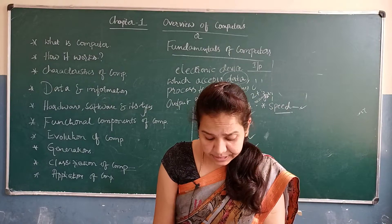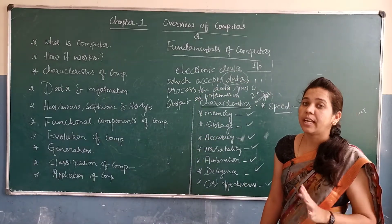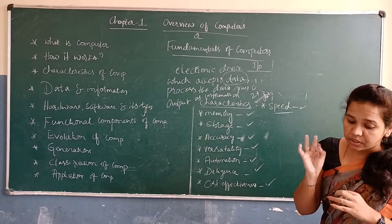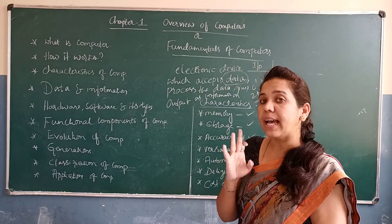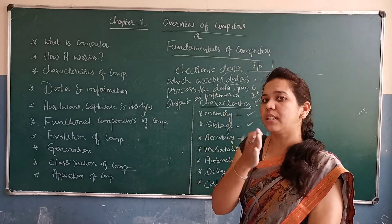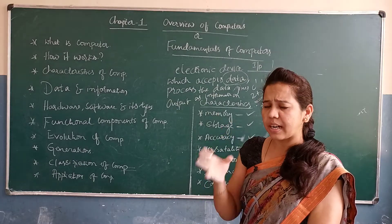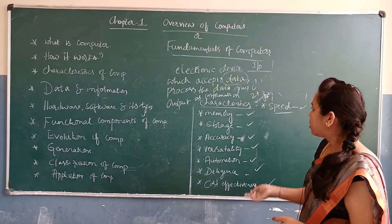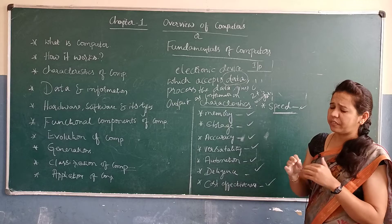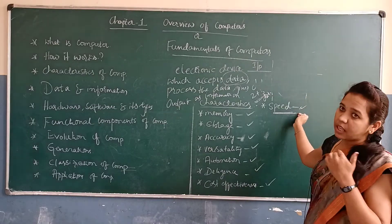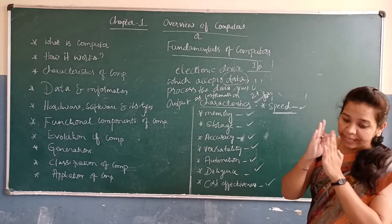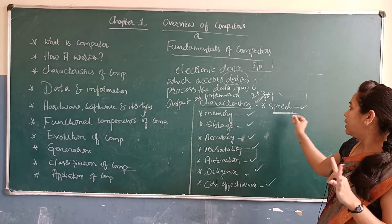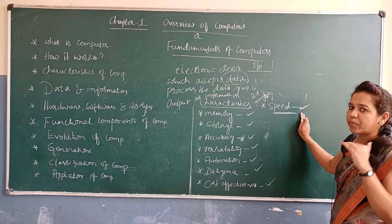A computer is capable of adding an 80-digit number in 300 to 400 nanoseconds. If you have an 80-digit number and ask the computer to add, it will give you the result in just 300 to 400 nanoseconds. That is how fast a computer works — that is the speed characteristic of the computer.